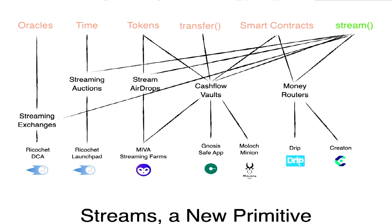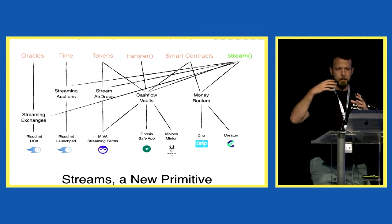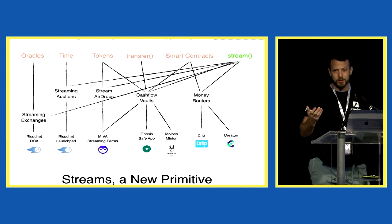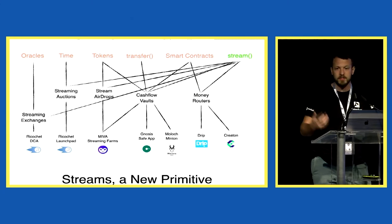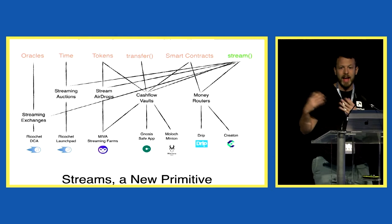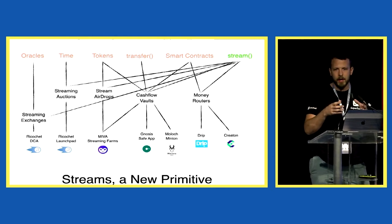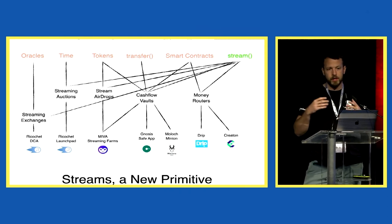Streaming exchanges were the first thing people decided to build. Auctions are extremely interesting with streams — instead of a one-off transfer, you can buy positions over time. People have built continuous Dutch auctions and continuous English auctions. A continuous Dutch auction is a great way to make a streaming ICO, which somebody has already done. You can do streaming airdrops — transferring money from one account to many over time rather than instantaneously, so they can't dump as quickly and you can incentivize them to stay in your community. And vaults — a smart contract with money can now also have cash flows, enabling things like streaming salaries to all your employees. We have an integration with GnosisSafe and MolochDAO so you can do exactly that.